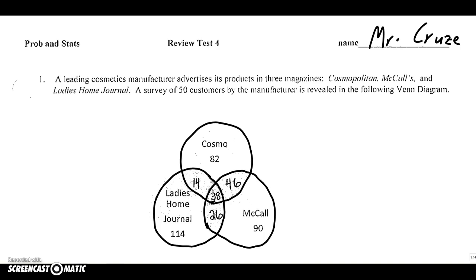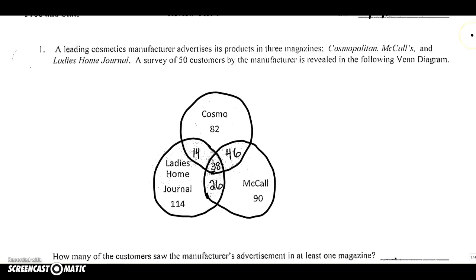First question is a Venn diagram question. A leading cosmetics manufacturer advertises its products in three magazines: Cosmopolitan, McCall's, and Ladies Home Journal. A survey of 500 customers by the manufacturer is revealed in the following Venn diagram.